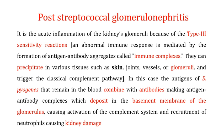When there is deposition of antigen-antibody complexes in the glomerulus, this causes activation of the complement system and recruitment of neutrophils, which causes damage to the kidney. If you analyze the urine of these individuals, you may see proteins in the urine and blood in the urine. So in post-streptococcal glomerulonephritis, due to type 3 sensitivity reactions, there is damage to the glomerulus specifically, thereby compromising the function of the kidney.